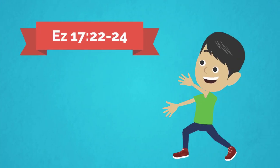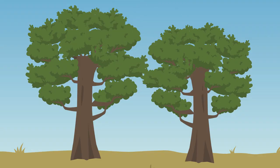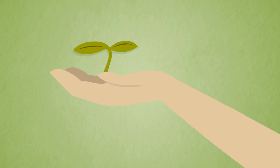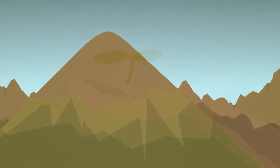A reading from the Book of the Prophet Ezekiel. Thus says the Lord God: I, too, will take from the crest of the cedar, from its topmost branches tear off a tender shoot, and plant it on a high and lofty mountain.